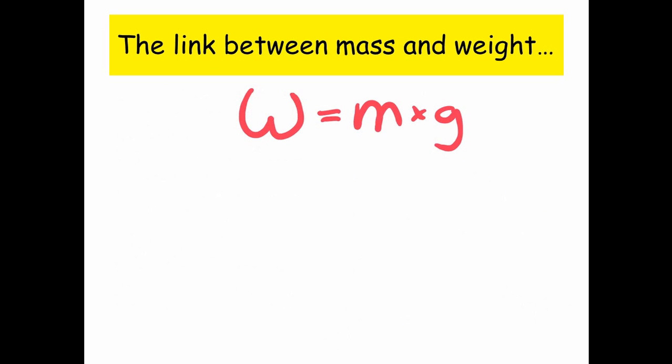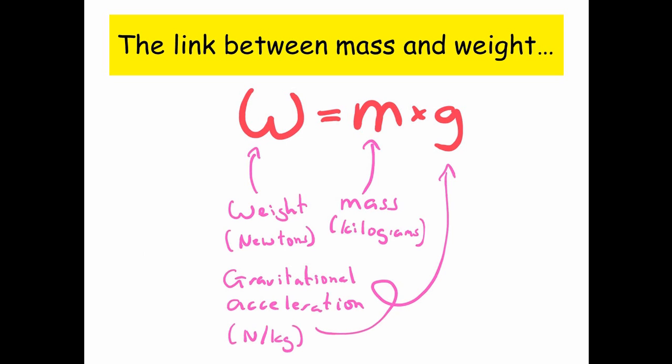So here's an equation that links mass and weight. Weight w is measured in newtons, and that's equal to mass, measured in kilograms, times by g, which is gravitational acceleration in newtons per kilogram, but often you'll see the units meters per second squared as it's also an acceleration.